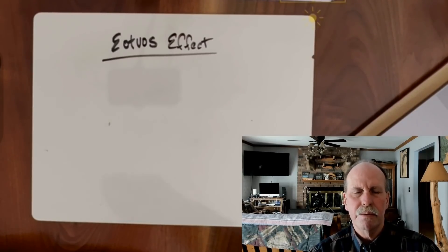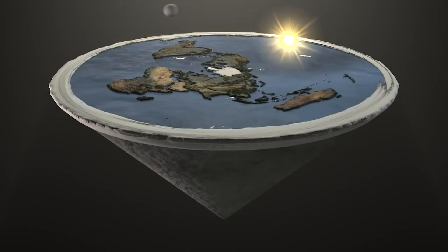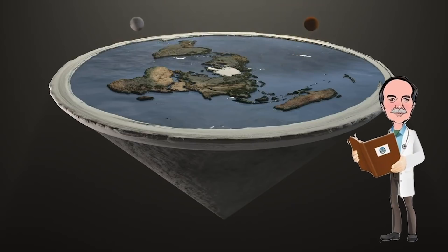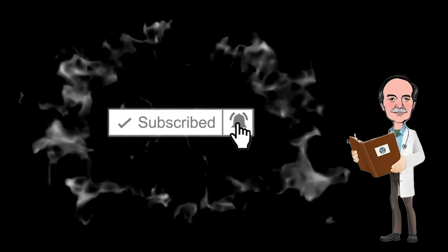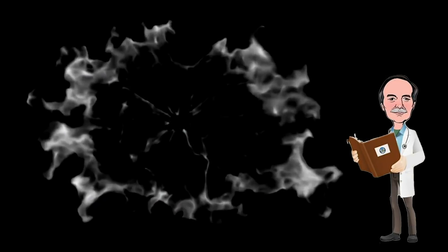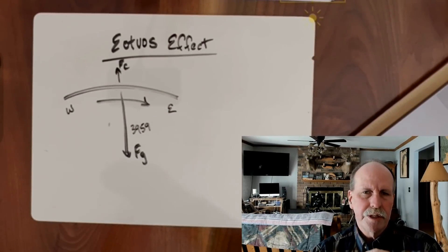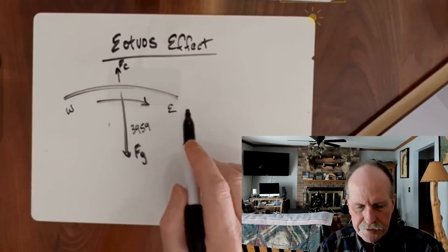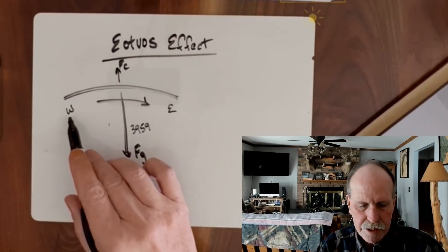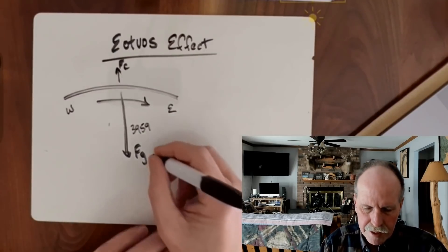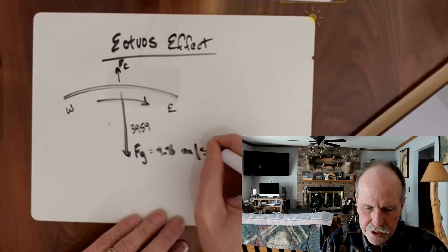And the second is we're going to see the reaction of the science denial community to the Eötvös Effect. Whenever you make a logical argument, you have certain things that you set as givens at the beginning. We're going to set the following as given: the Earth is a sphere of radius 3,959 miles. It rotates from west to east and gravity equals 9.8 meters per second squared.